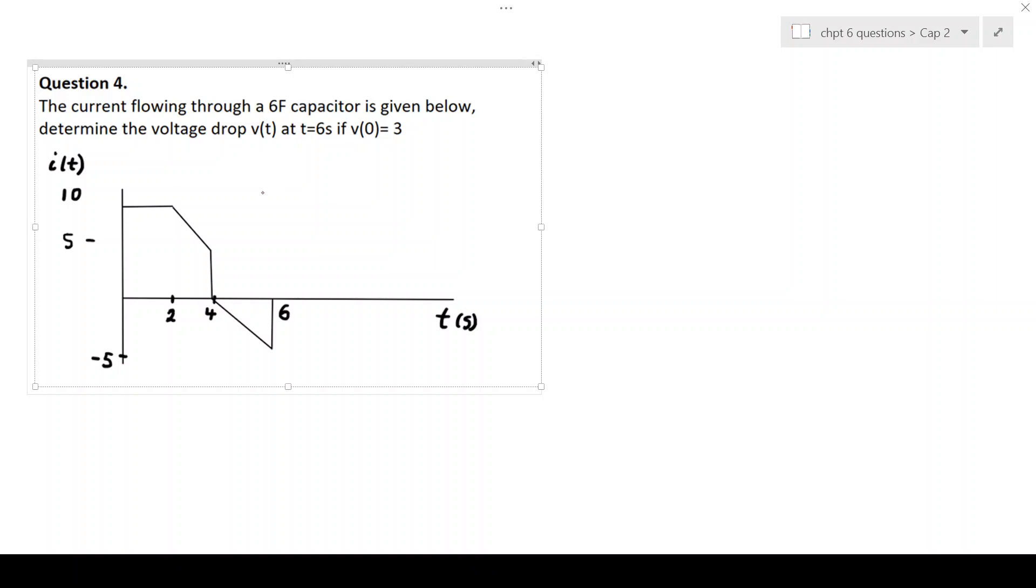Right, so we need to determine the voltage, which we should know. The voltage across the capacitor as a function of time is going to give us 1 over C, integral from T₀ to t, and we're going to be integrating the current through the capacitor, dt, plus the voltage at T₀.